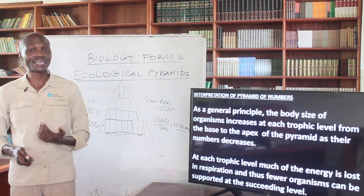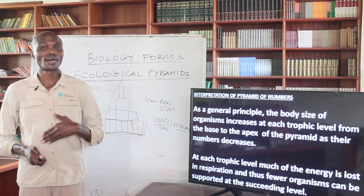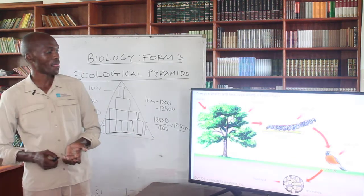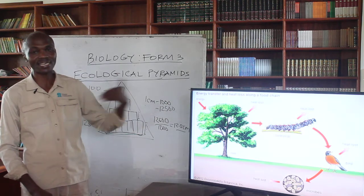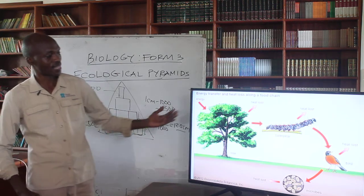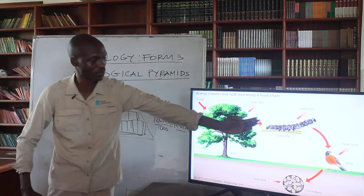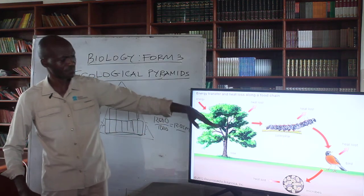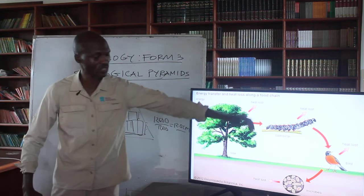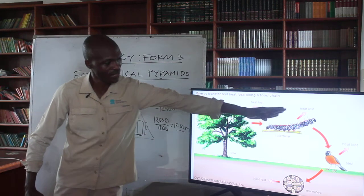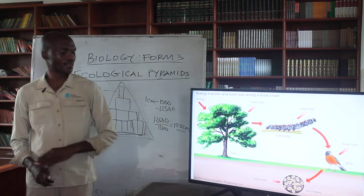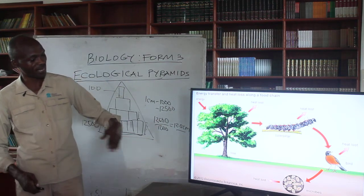The size of organisms reduces and the numbers become fewer at higher levels. We are talking about energy loss, or the transfer of energy from one level to another. For example, when caterpillars feed on a plant, some heat is lost via respiration. At every level there is loss of heat until the energy flow becomes minimal.